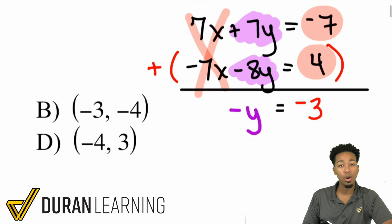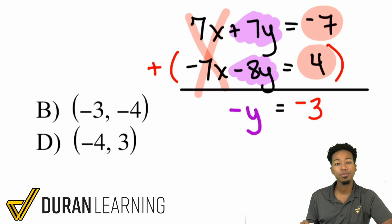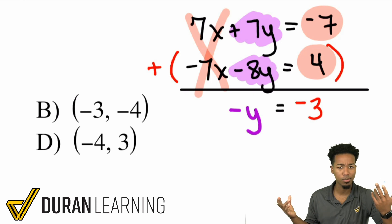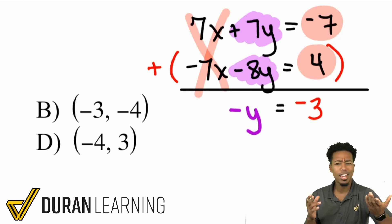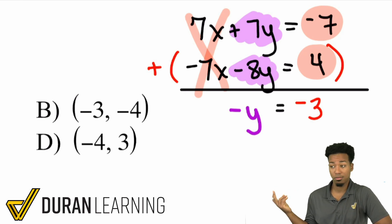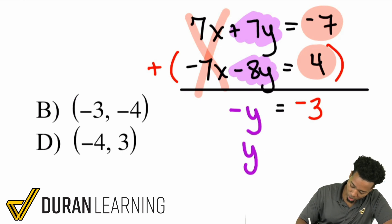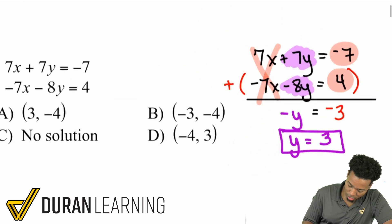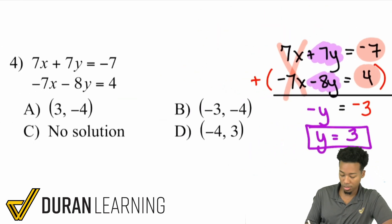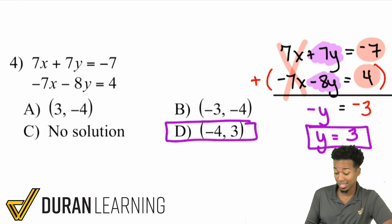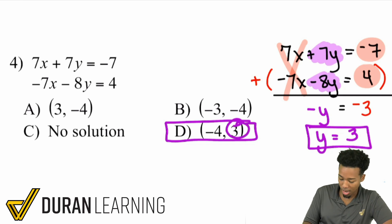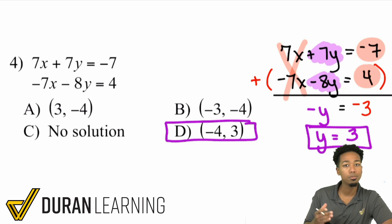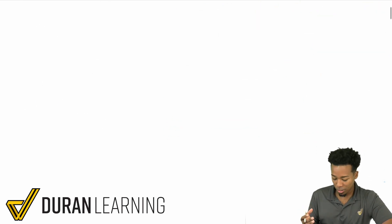We have negative y equals negative 3. Negative y is not by itself — we need a y by itself, not a negative y. To get rid of a negative, you can multiply or divide by negative 1. Or the shortcut: if you want to get rid of a negative, just change the sign on both sides. So the final answer is y equals positive 3. Looking at the answer choices, y equals positive 3 appears in only one answer — that's it, because it's y that equals positive 3, not x. We don't have to do any more work; we're done.